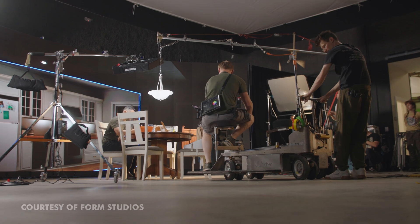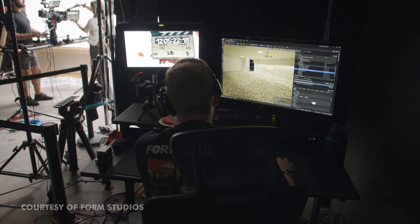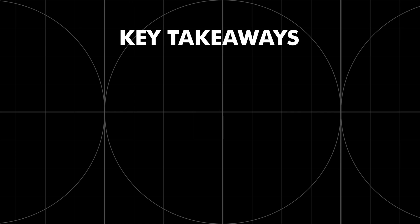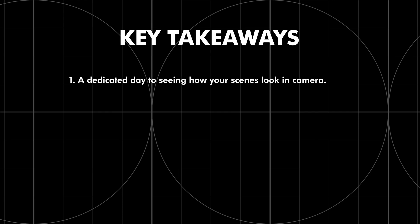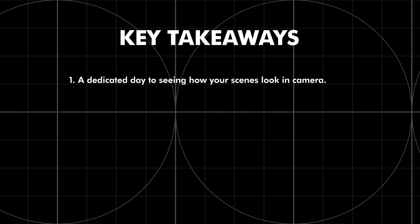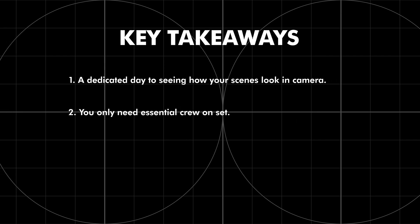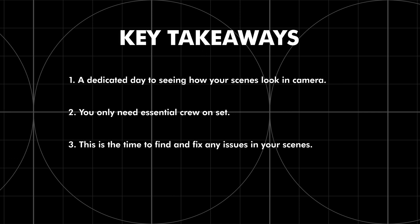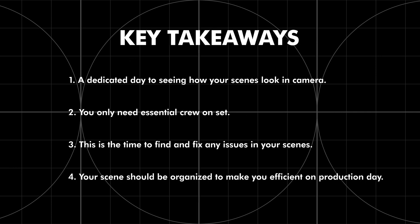I know this is kind of a dream scenario — that's not always the case. You don't always have enough time on your pre-light day, and you might not have enough people to get through all of those tasks, but it definitely can make your production day easier no matter what. So let's recap: a pre-light day is the day where you're getting together for the first time to project your environments and start setting up shots, camera, and lighting, seeing how it looks through the lens of a camera. You only need key personnel on set, cutting down on budget for crew, and you're identifying and fixing any issues in the virtual world. By the end of the day, you should have everything optimized and organized to make you as efficient as possible on the production day. That is a pre-light day — one of the most important days of the virtual production process.